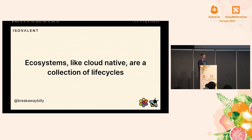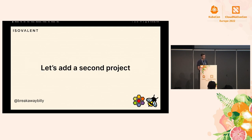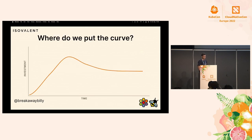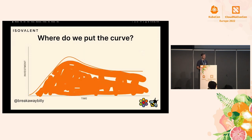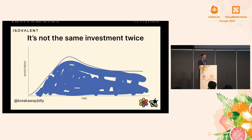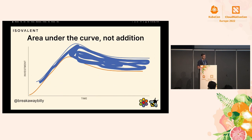If we're not looking at just a single project but a whole ecosystem like Cloud Native, it's not just a single life cycle we're looking at — it's really a whole collection of life cycles. So let's add a second project. The question I'd ask is: where do we put the curve? Do we need to make the same whole investment all over again? No, it's not the same investment twice. Going back to some high school math, it's more similar to the area under the curve rather than addition. You can build on top of the existing community momentum, tools, and life cycles you already have.